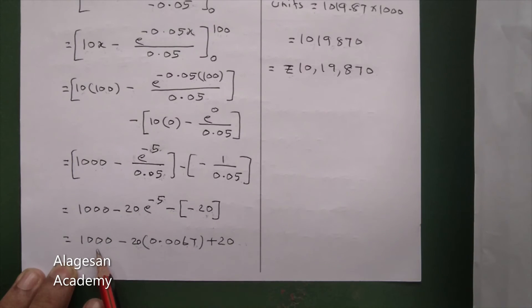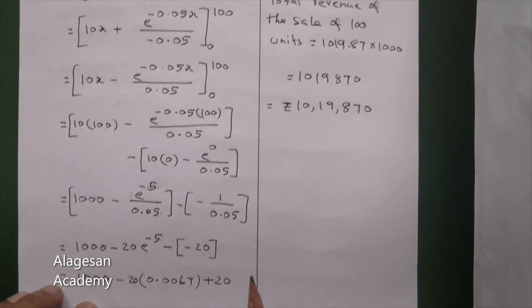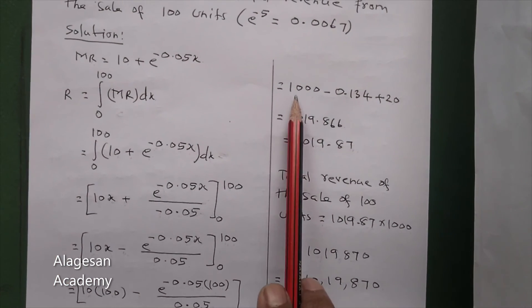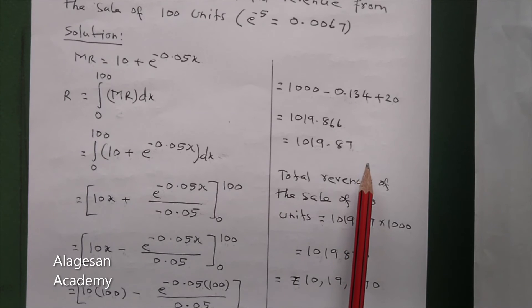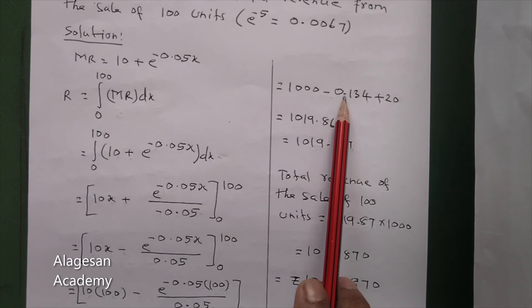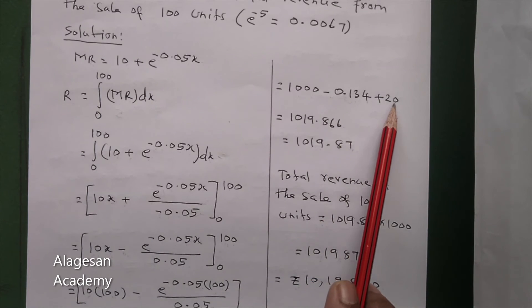Simplify and you get the answer. So 1000 minus, 20 times 0.0067 is 0.134, plus 20.